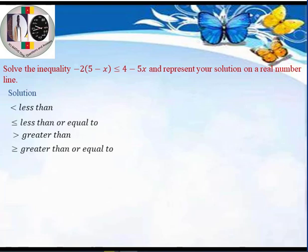With this in mind, let's solve the inequality: minus 2 into 5 minus x, less than or equal to 4 minus 5x. The first thing to do is to obey BODMAS — clear the bracket first. Everything outside the bracket, minus 2, multiplies everything inside: 5 and minus x. So minus 2 times 5 gives minus 10, and minus 2 times minus x gives positive 2x. We now have minus 10 plus 2x less than or equal to 4 minus 5x.